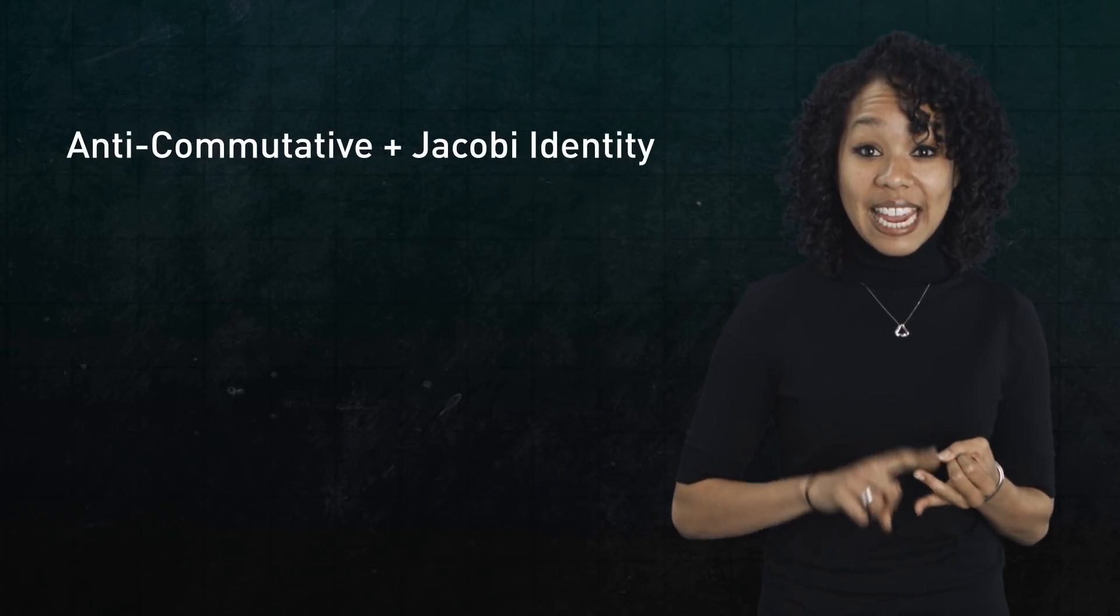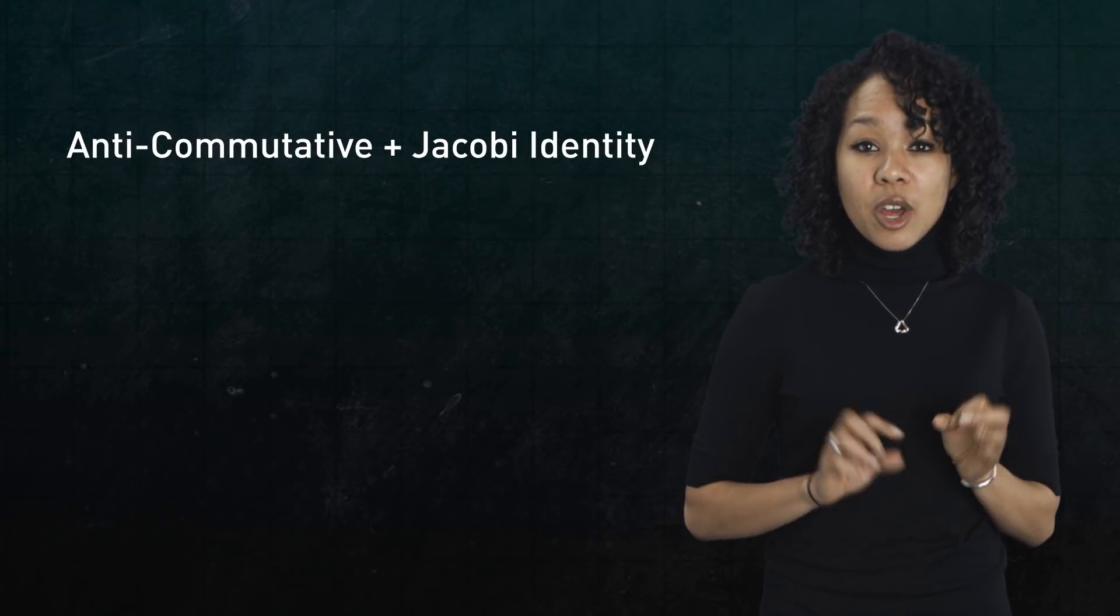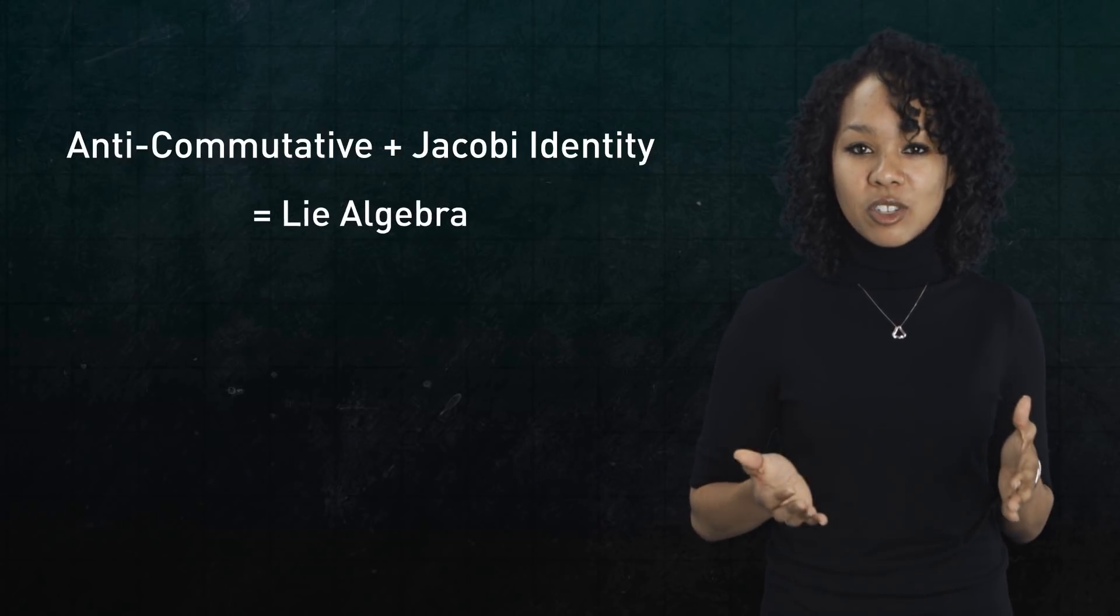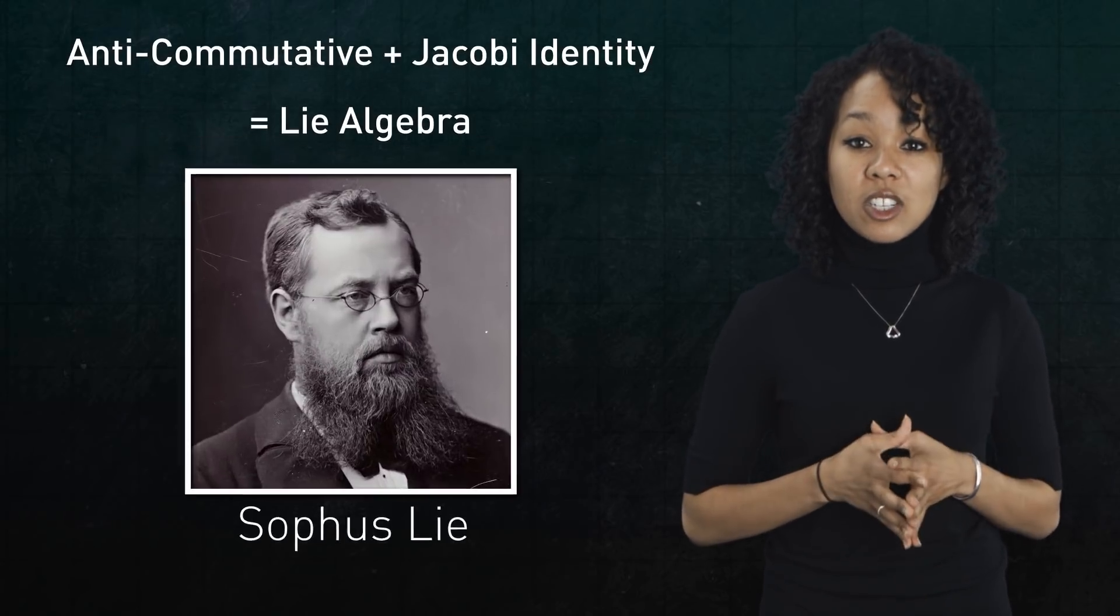Now, here's what's cool. Because the cross product is anti-commutative and it satisfies the Jacobi identity, three-dimensional vectors with the cross product form what's called a Lie algebra, named after Norwegian mathematician Sophus Lie. And even better, any time you have a set of things with a multiplication that satisfies those two properties, it's anti-commutative and it satisfies the Jacobi identity, you have a Lie algebra.